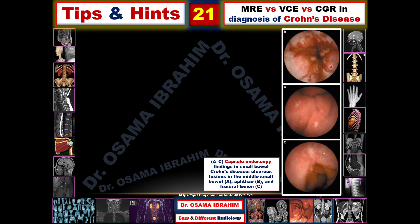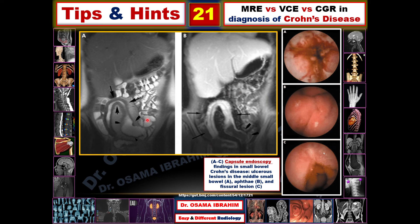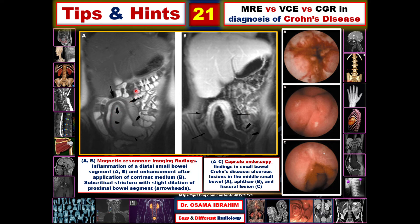The VCE images show different degrees of ulceration: lesions in the middle small bowel, progressing to abscess and fissure in the most severe form, which increases the Crohn's classification score. The MRI shows thickening of the terminal ileum wall appearing as an enhancing wall on the contrast study. Enhancement is the key feature on contrast MRI, while dilated bowel loops and wall thickening can also be seen on the non-contrast T2 image.